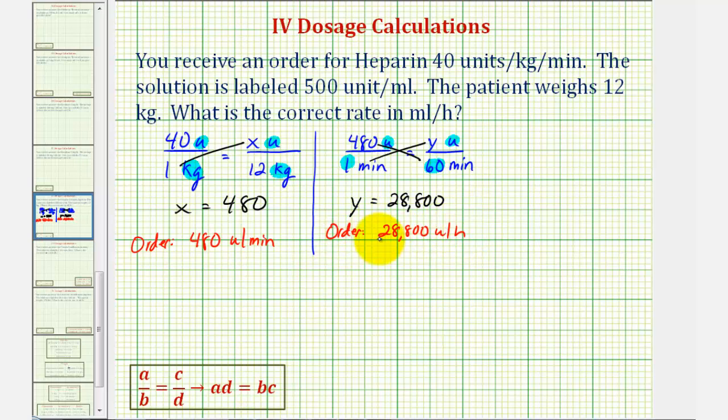Now that we know how many units the patient needs per hour, the last step is going to be to find how many milliliters the patient needs per hour, which will require one more proportion. The next proportion will compare the number of units to the number of milliliters.